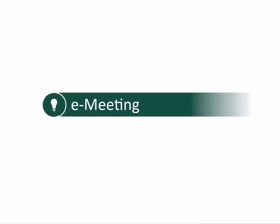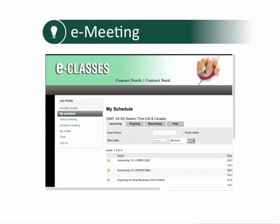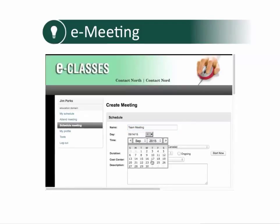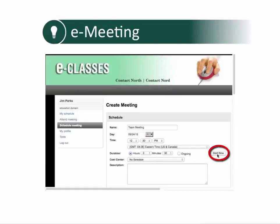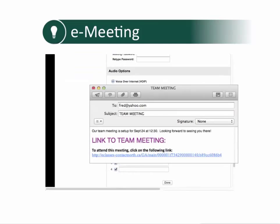Any eClasses user, even students, can easily book a meeting for up to 20 people using the Schedule Meeting option in the left-side menu of the My Schedule page. Use this feature to set up office hours or study groups at a specific time, or you can use the Start Now feature for a spontaneous meeting. You can even send email invitations with direct links to the meeting.